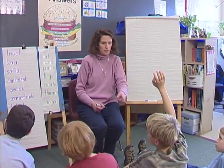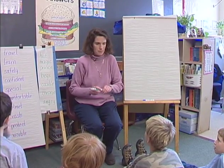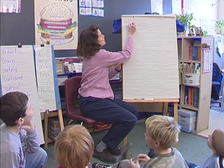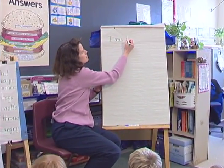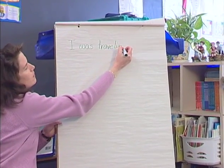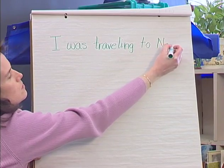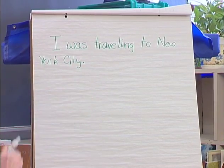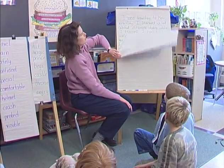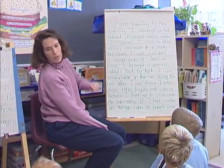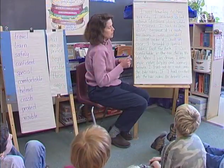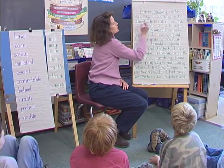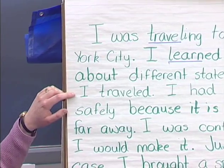The class works together to create their story. The first word is 'travel,' and students suggest beginning: 'I was traveling to New York City.' The students re-read the story after it is written and identify the vocabulary words as they appear — for example, calling out 'travel' and 'learn' as they encounter them in each line.